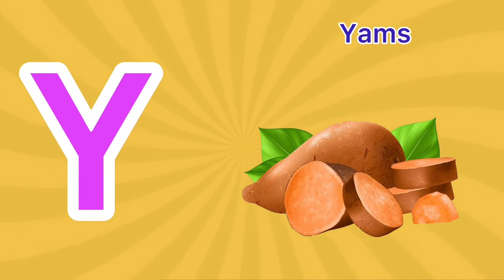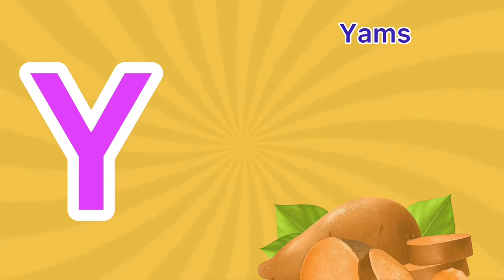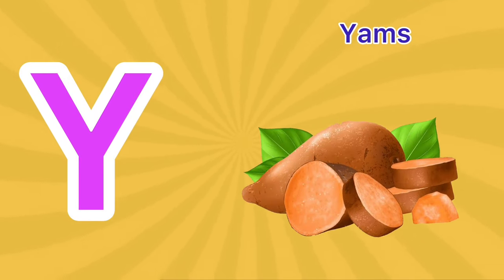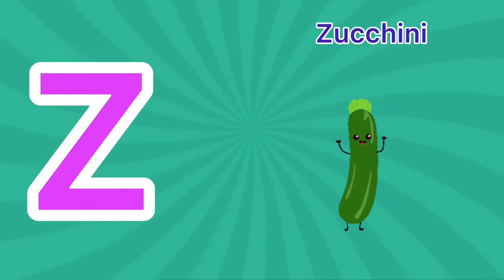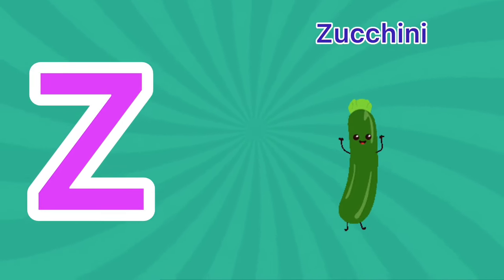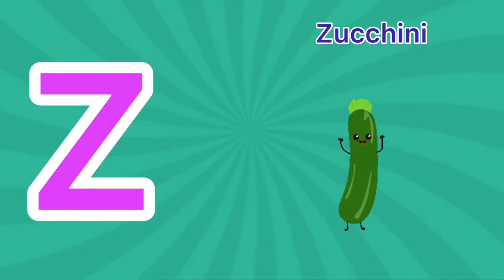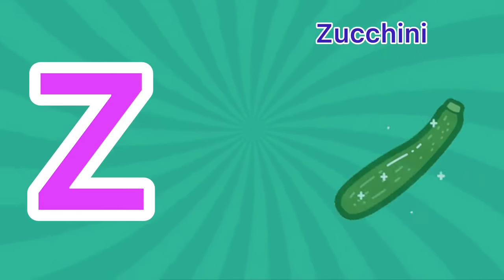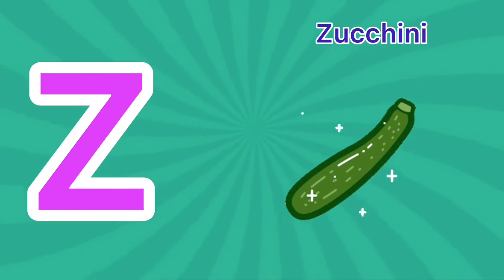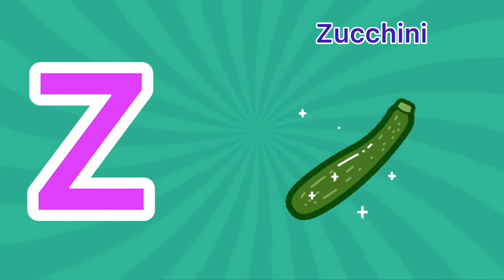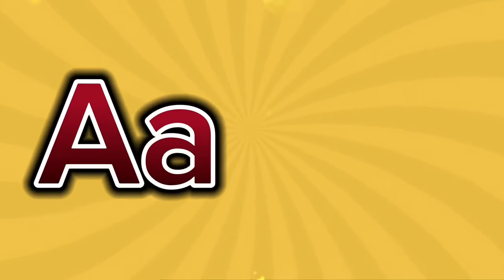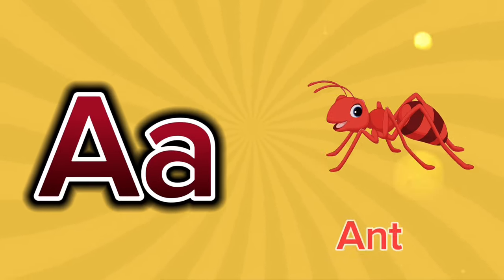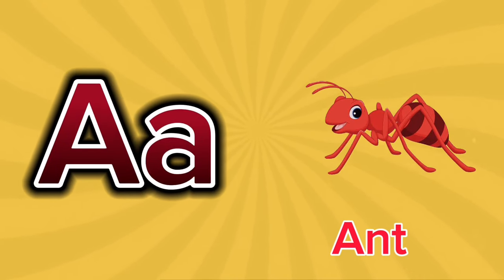X is for Ximenia. X-X-X. Ximenia. X is for Ximenia. X-X-X. Y is for Yams. Y-Y-Y. Yams. Y is for Yams. Y-Y-Y. Z is for Zucchini. Z-Z-Z. Zucchini. Z is for Zucchini. Z-Z-Z.